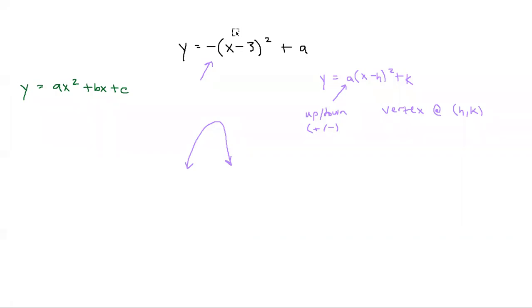The next thing is to recognize that the subtraction is part of the formula here. So even though we've got minus 3, it means that the value of h is positive 3. The value of k is a. So according to the vertex form of a parabola, this vertex should be located at 3 comma a, which is answer choice d.